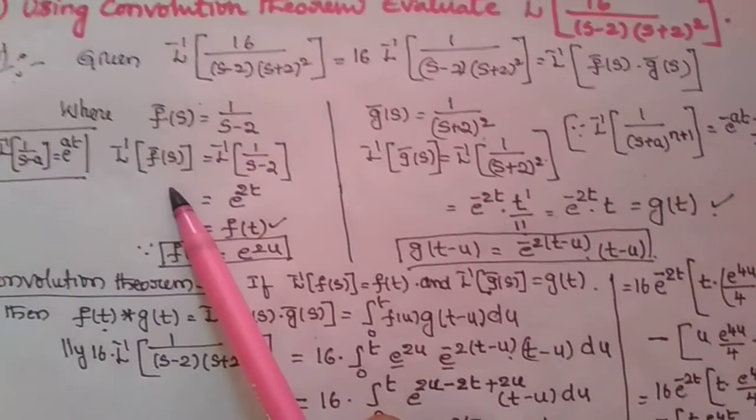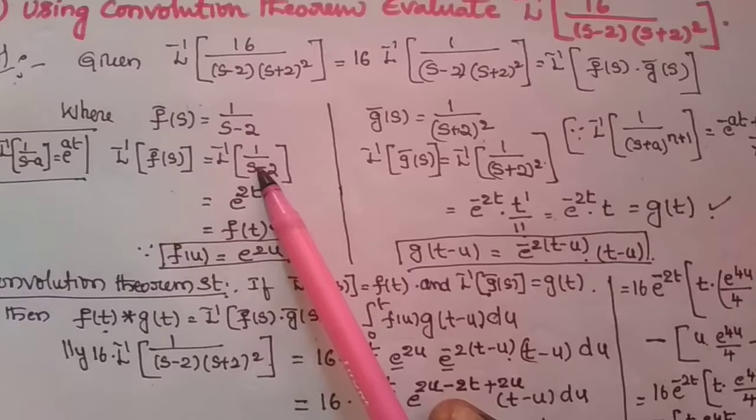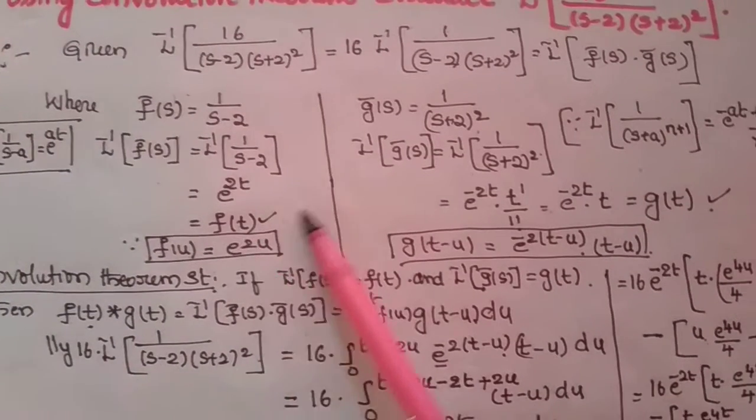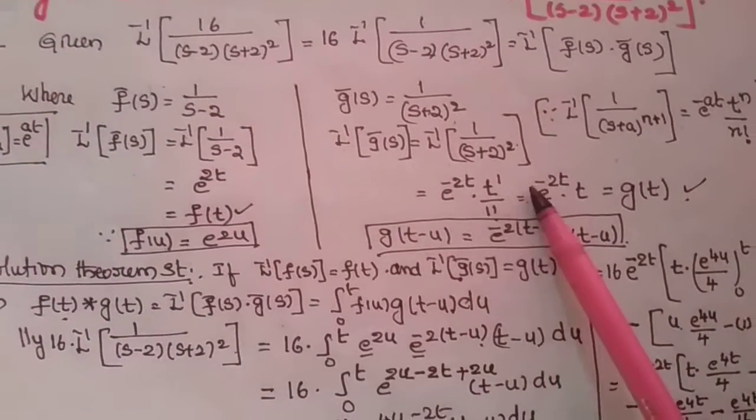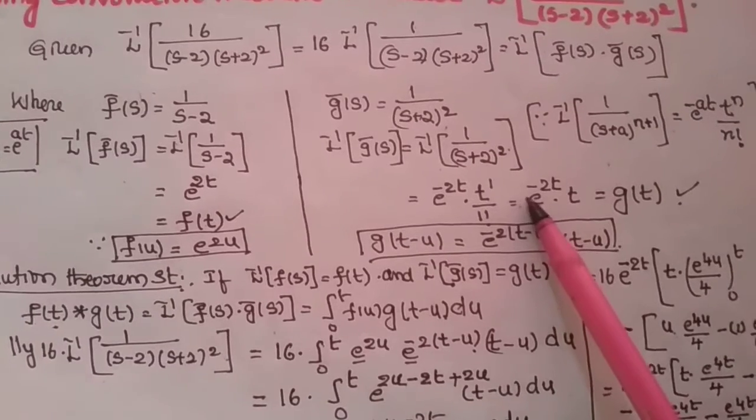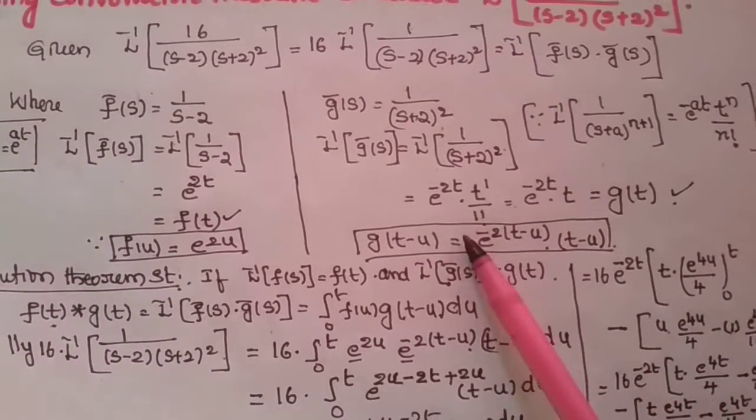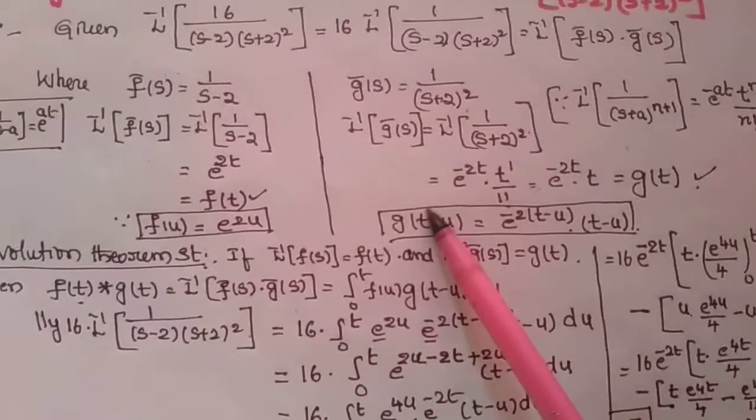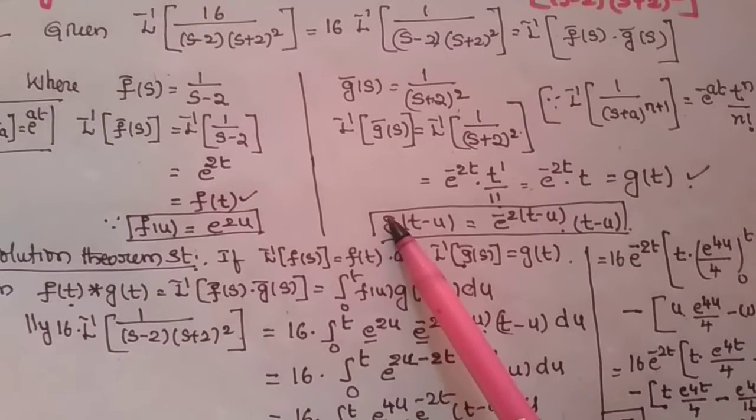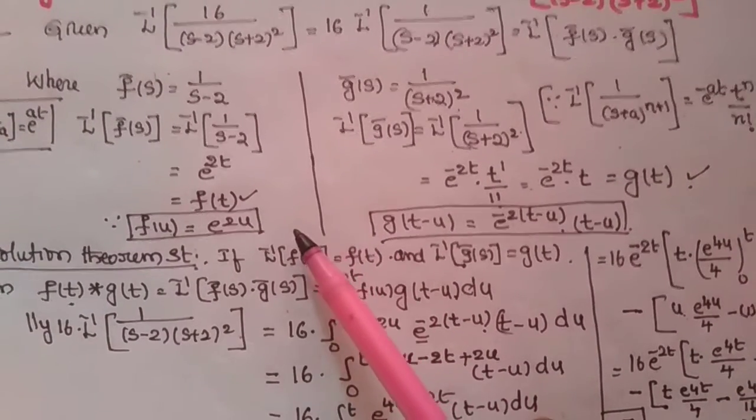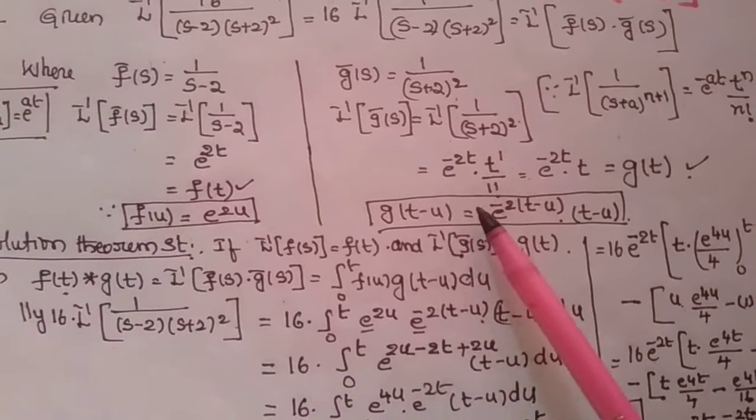So, applying on both sides L inverse, then we will get the f of t like this and g bar of s, we will get e power minus 2t into t g of t. And before we are going to apply convolution theorem, let us denote f of u as well as g of t minus u.